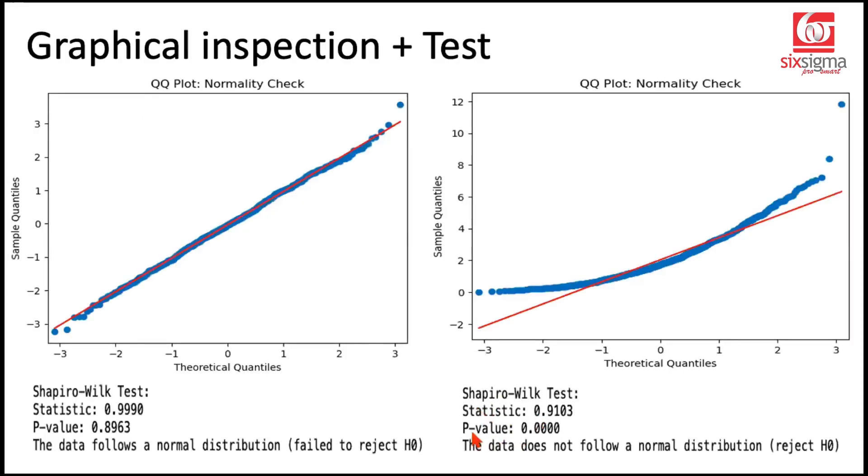However, in the second case, the p-value is 0. So it is definitely less than 0.05, which means we will have to reject the null hypothesis.